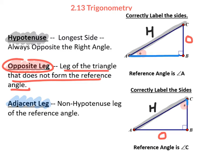The adjacent leg is the one that does form part of the reference angle. An easy way to remember: make an arc around the reference angle, and you will always touch the adjacent side and the hypotenuse — the hypotenuse being the longer one. The opposite is always the side not touched by that arc.